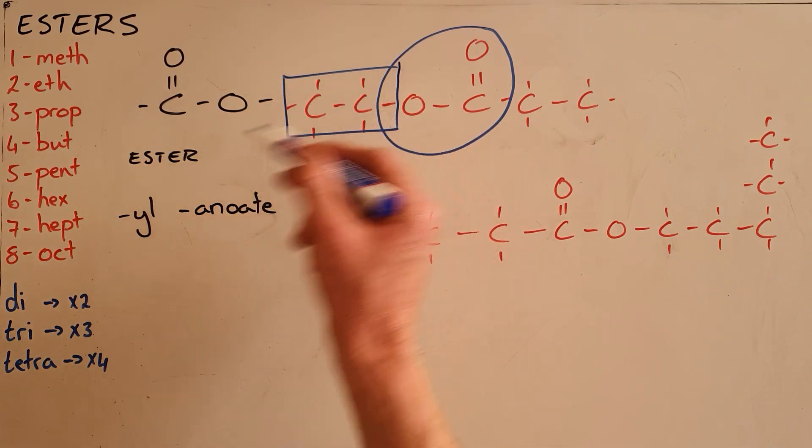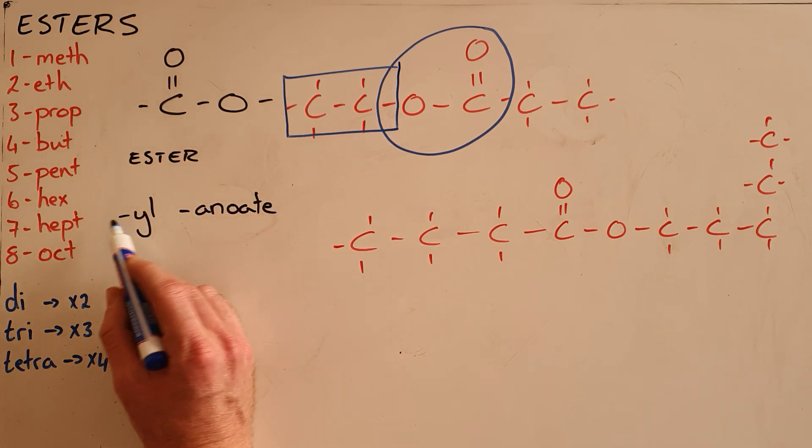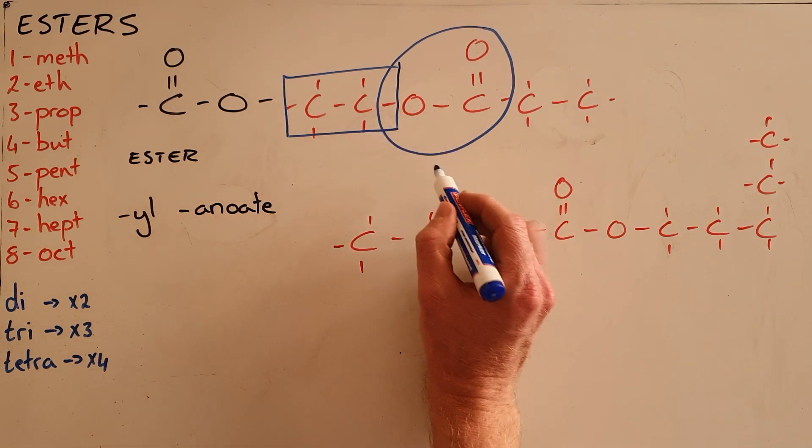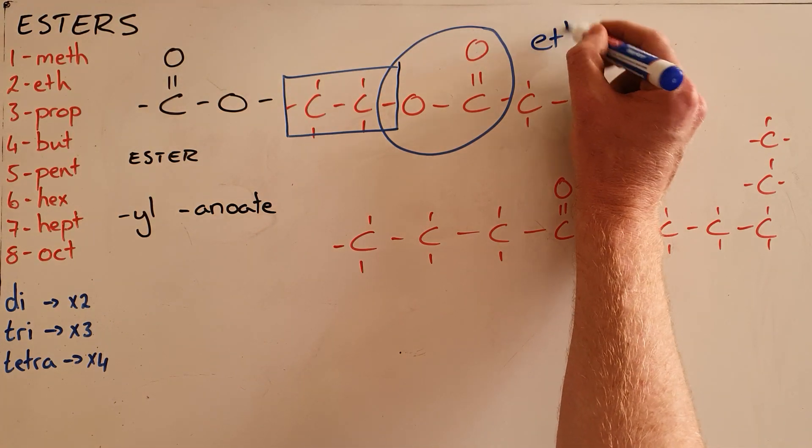That is always seen as the branch to this ester and as a result comes first and gets the suffix YL. So in this case, that is two carbons, meth-eth, so we would call this ethyl.